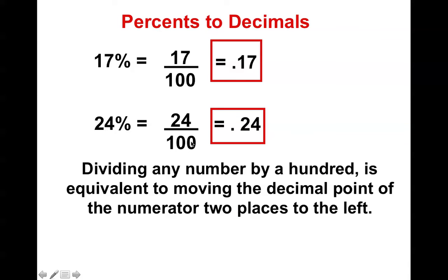Have you noticed that when you are dividing any number by 100, it's equivalent to moving the decimal point of the numerator two places to the left? Therefore, the decimal place is right here on 24, and we move it two spaces to the left — 1, 2 — and that's how we get 0.24, or 24 hundredths.